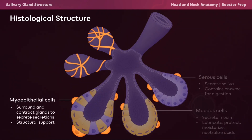Mucus contains bicarbonate ions which help neutralize acids produced by bacteria in the mouth. Myoepithelial cells are specialized contractile cells found in the salivary glands. They contract and exert pressure on the secretory units, facilitating saliva release, regulate the rate and volume of secretion, and provide structural support to the secretory units.